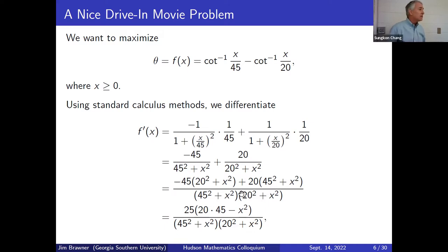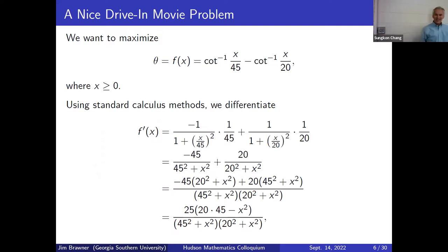Getting a common denominator and gathering terms in the numerator, we're left with a nice expression: 25 times (900 minus x²), all over a positive denominator. The 25 is the height of the screen, and 20 times 45 gives 900.